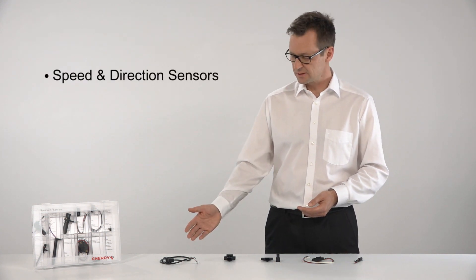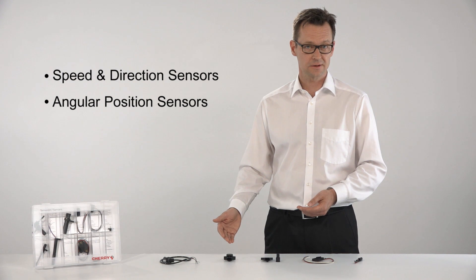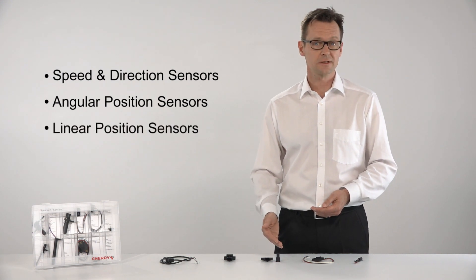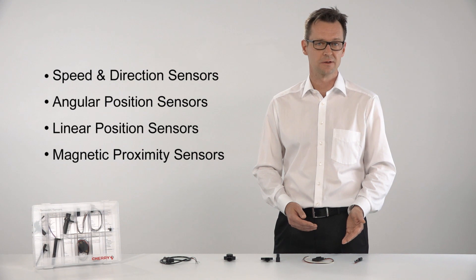We focus on four main areas: speed and direction sensors, angular position sensors, linear position sensors, and magnetic proximity sensors.